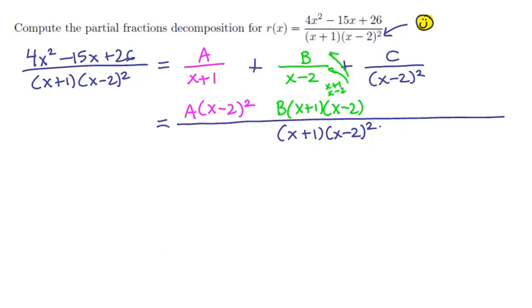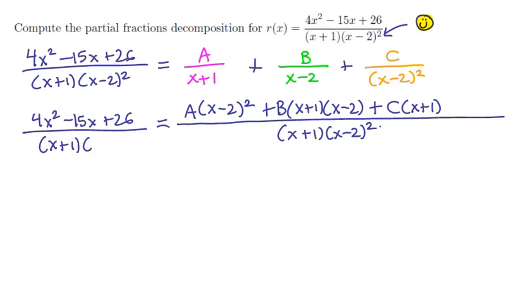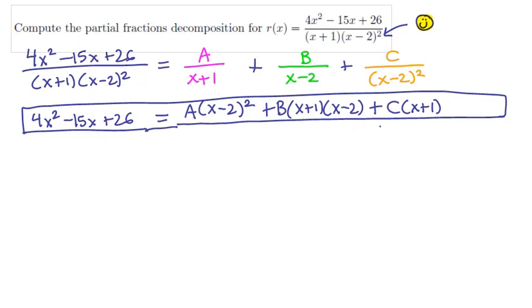The third term, which already has an x minus 2 squared, only needs the x plus 1, and so it will contribute c times x plus 1. Since these terms now have the same denominator, we can add them up and obtain this expression. If we set it equal to the original rational function, then since the denominators match, we can set their numerators equal to each other and simply focus on that equation.